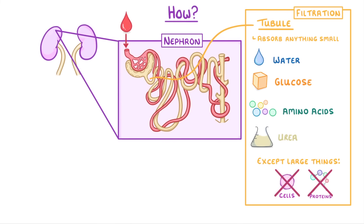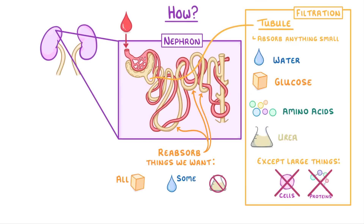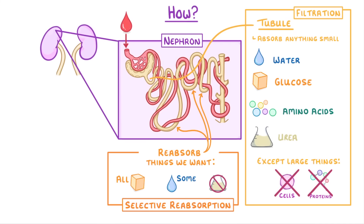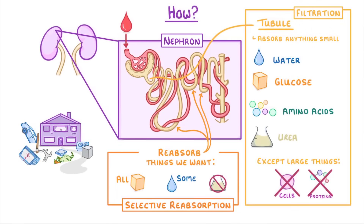Then as all this stuff makes its way through the kidney tubules, we reabsorb all the things that we want to keep. For example, because glucose is always useful, we reabsorb all the glucose, whereas we only reabsorb some of the water, and we don't reabsorb any urea. Because we're selectively reabsorbing only those bits that we want, we call this process selective reabsorption. You can think about it like cleaning out your house by first throwing everything outside, and then only bringing back inside those bits that you want to keep. And in the kidney version, all those things that we don't want is what forms the urine.